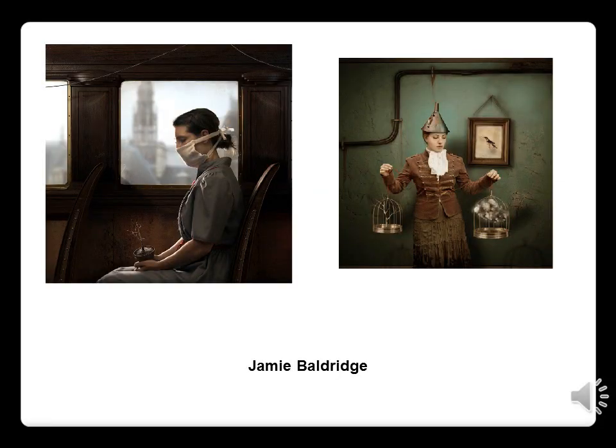I thought I would leave you with a few images by an artist who works at the university with us — a photography professor named Jamie Baldridge, also a close personal friend. Jamie takes photographs and combines them with digital images he manufactures in the computer using a program called Maya. It's sometimes hard to tell what is artificial and what is real in his images. He takes many hours to painstakingly create these fantastical environments. Thank you for listening.